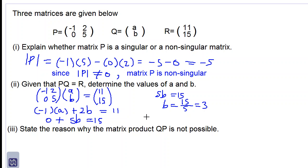So using equation 1 now which is negative a plus 2b equal to 11. We substitute b is equal to 3. So we will have negative a plus 2 times 3 is equal to 11.